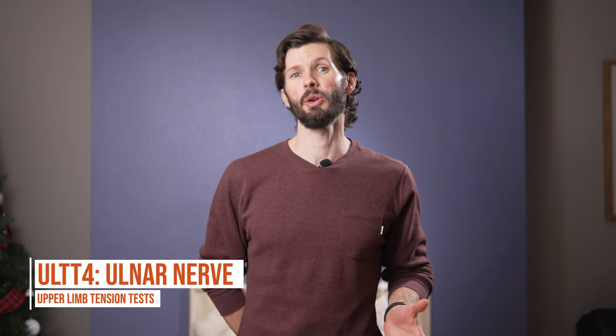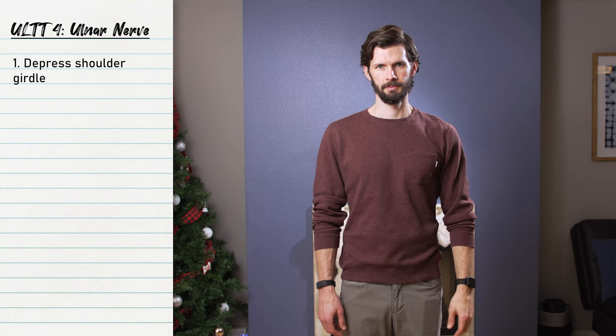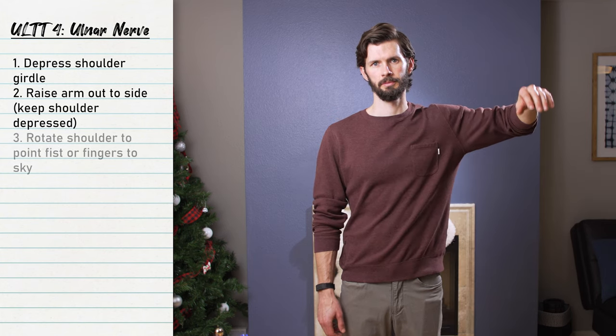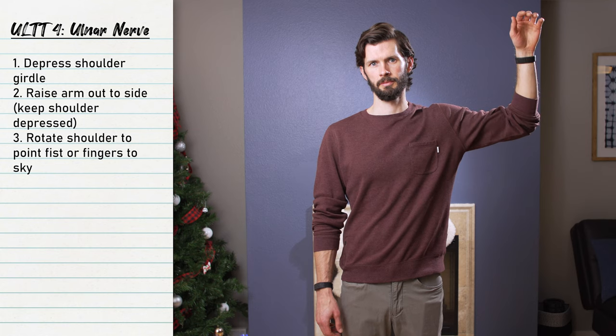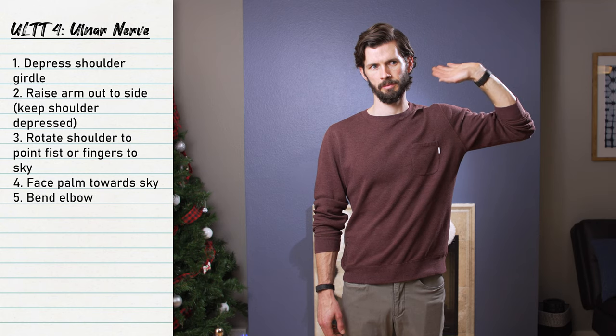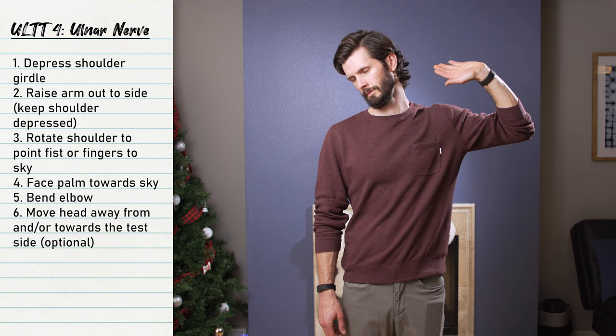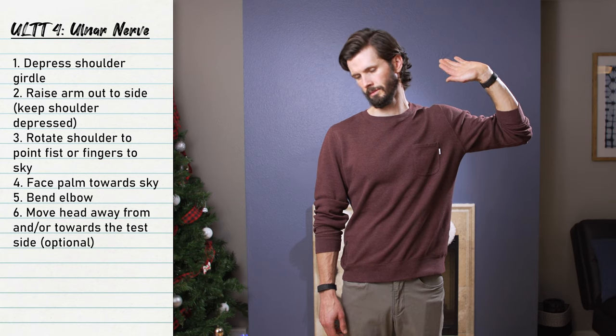The final test is upper limb tension test four, which is for the ulnar nerve. This test shares more similarities with upper limb tension test one, as your arm will be elevated out to the side. You'll still have shoulder girdle depression, shoulder abduction, shoulder external rotation, and wrist and finger extension. But you'll have elbow flexion rather than elbow extension — I like to think of this as a pizza carry.